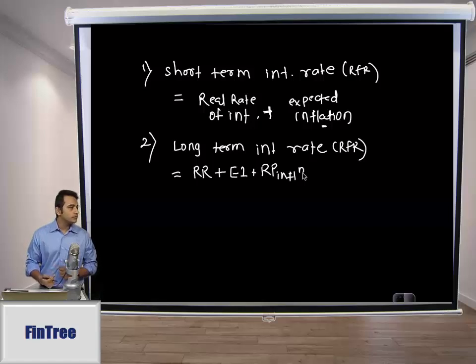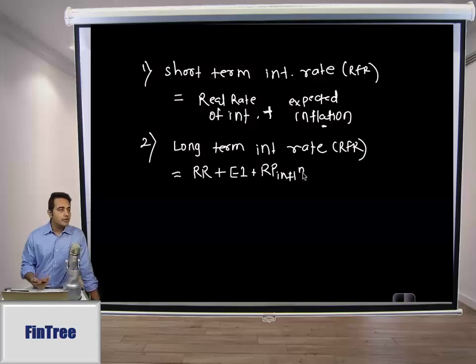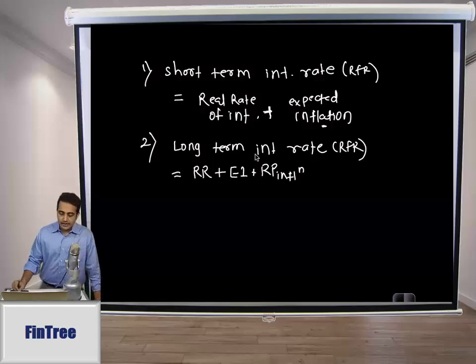We have already seen this relationship in the past and we used to call this as international Fisher relationship. Precisely the same thing where he said nominal rate would be made of real plus what is the expectation of inflation. And since this number is uncertain, to compensate for that variability there should be a risk premium attached to it.